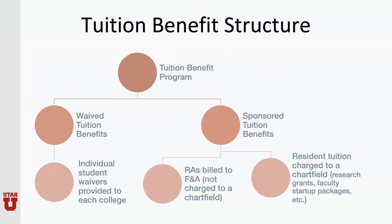This is a brief illustration of that structure. The tuition benefit program overall includes waived tuition benefits and sponsored tuition benefits, where we have RAs billed to F&A — which is similar to the current structure — and resident tuition charged to a chart field that you will provide at the time of entry, which is currently called extended tuition benefit and will now be called sponsored tuition benefits.